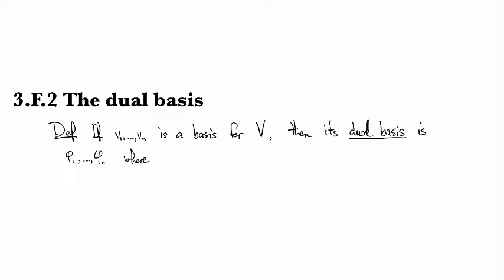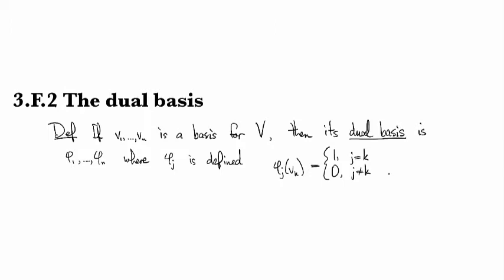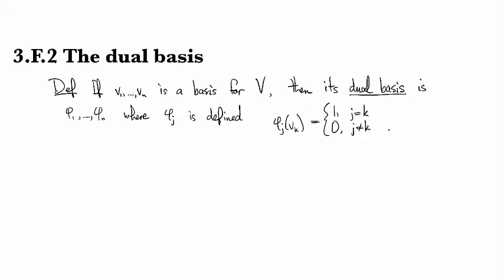where vj is defined by what it does on the basis of V. Namely, vj of vk is going to be 1 if j equals k, or 0 if j is not equal to k. So if you've seen the idea of a characteristic function or indicator function, that's exactly what's going on here. It's equal to 1 where they match and otherwise it's equal to 0.